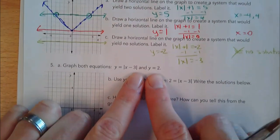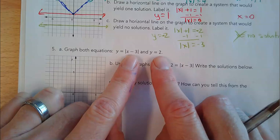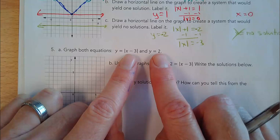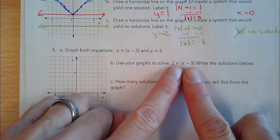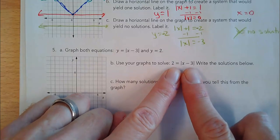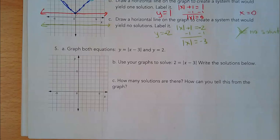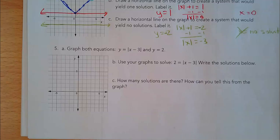Now instead of them giving us options, they're saying graph these two functions and see where they meet. So I'm trying to solve when does the absolute value of x minus 3 equal the other function. If I graph them individually and they do intersect, they have a solution, and the x-coordinates where they intersect are the answer.